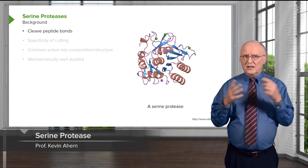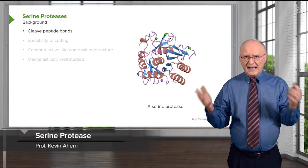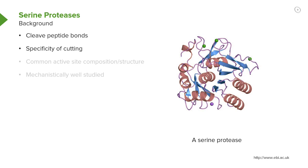Serine proteases cleave peptide bonds — that's their catalytic action. They have specificity of cutting by binding only to certain molecules and certain proteins; they only cut those proteins that they bind. They have a common active site: all the different serine proteases have a three-dimensional configuration of the place where the reaction occurs. That configuration is what creates the electronic environment necessary for the reaction to take place. The serine proteases are very well studied, so we understand the mechanism of their action quite well.